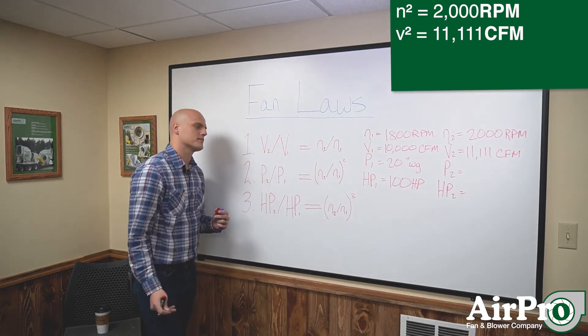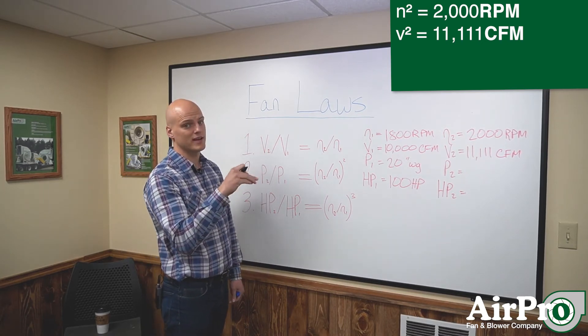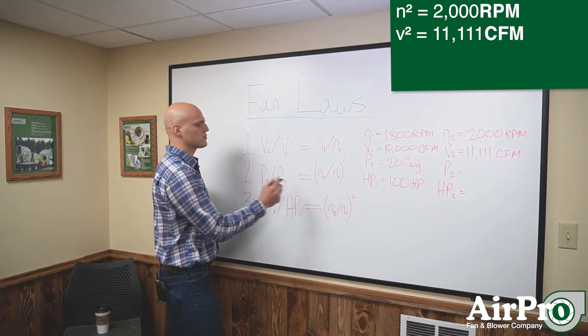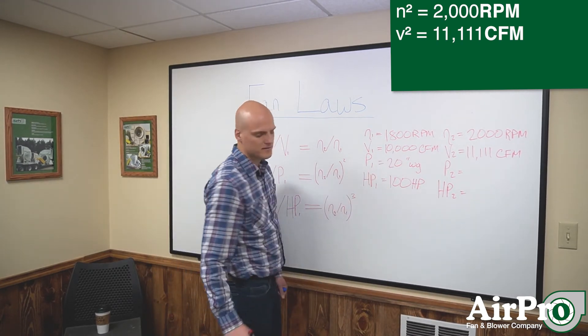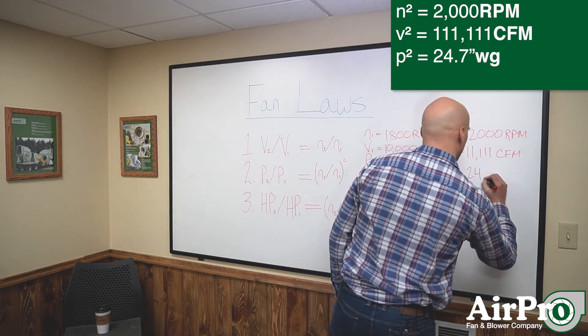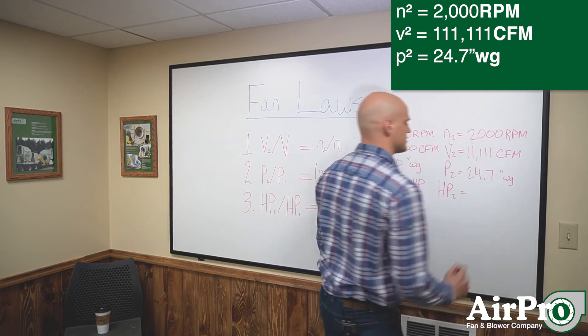Pressure. We're going to gain a factor of 2,000 divided by 1,800 squared and then multiply that by 20. And we get 24.7 inches of water.